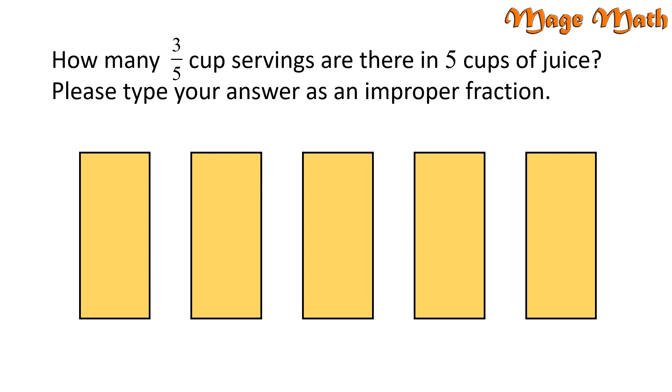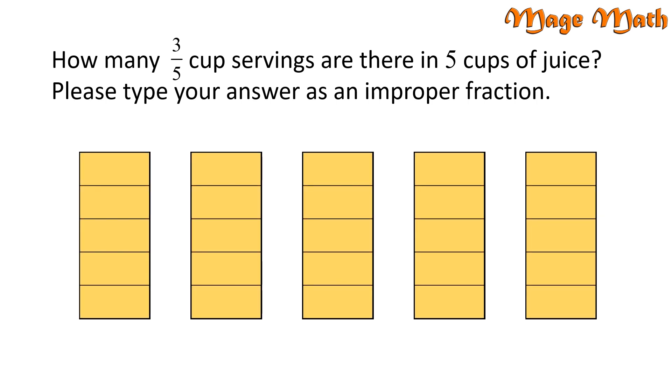We want to know how many 3 fifths cups are in each cup of juice. So that means we need to partition each cup into fifths. Next, we want to find how many groups of 3 fifths are in the model as a whole. This means we will group 3 parts together and then count the total number of groups of 3.